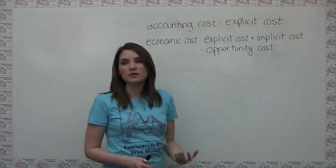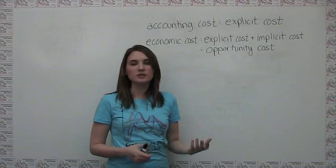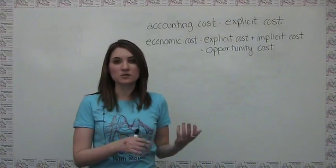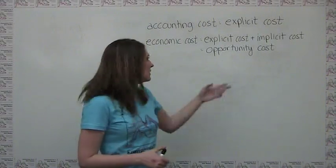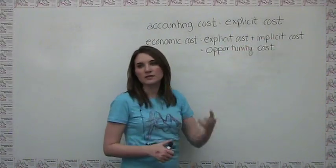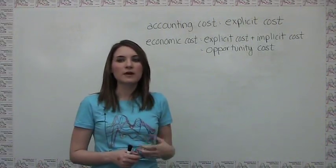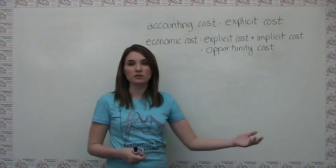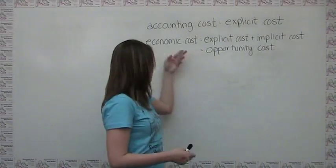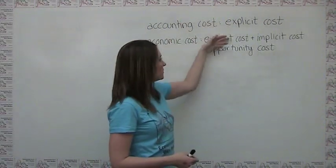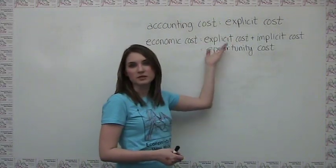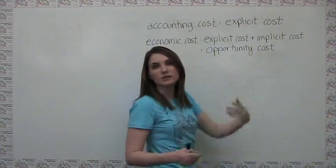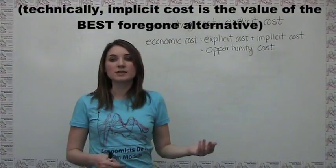For example, the monetary cost of a college education, or the accounting cost, includes the cost of tuition, books, and so on. The implicit costs of college, on the other hand, is the value of the wages that one foregoes in order to go to school rather than go to work. So when calculating economic costs, we would not only include the cost of tuition, books, etc., but we would also include the value of the wages that one is giving up in order to attend college.